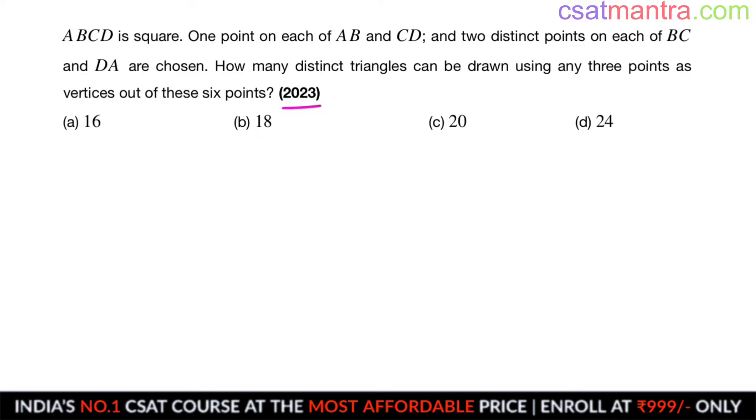Namaskaram, 2023 question based on permutation and combination. ABCD is square. One point on each of AB and CD and two distinct points on each of BC and DA are chosen. How many distinct triangles can be drawn using any three points as vertices out of these six points?